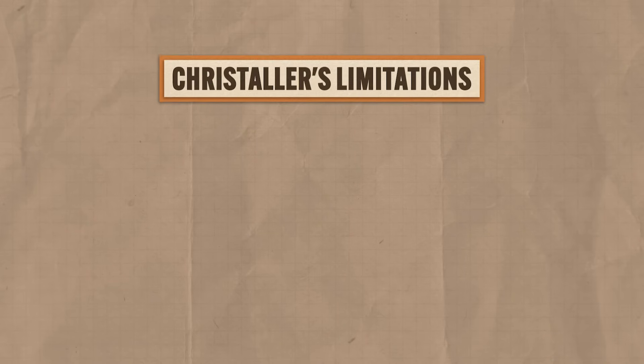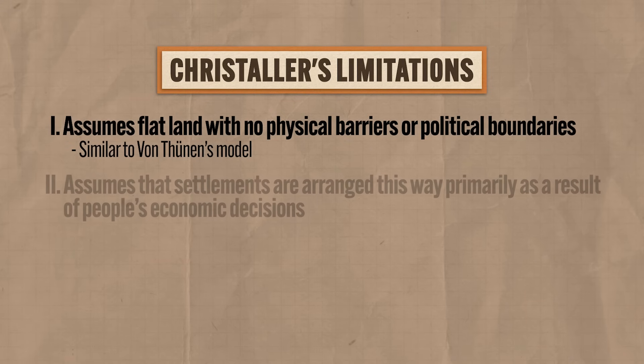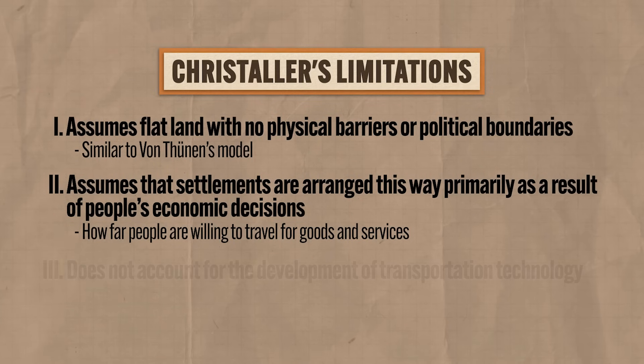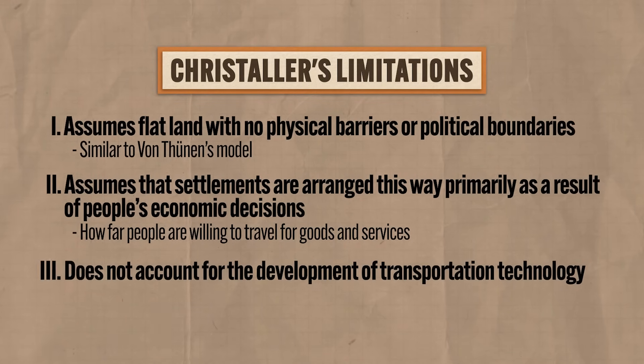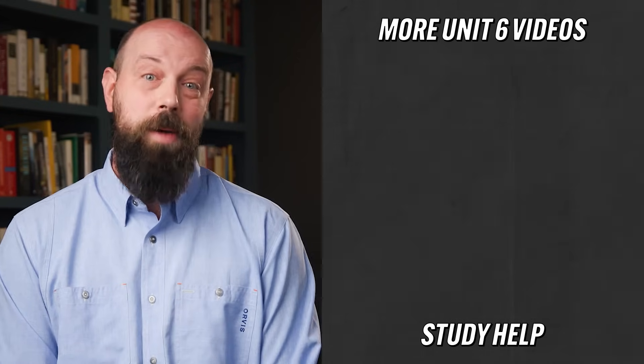Like any model, central place theory has limitations. It makes assumptions similar to von Thünen's model — flat land with no physical barriers or political boundaries. Christaller also assumes settlements are arranged primarily as a result of economic decisions, like how far people are willing to travel for goods and services, but this doesn't account for cities serving other functions like administration — for example, Washington, D.C. The biggest limitation is the development of transportation technology, which disrupts this model considerably. Because cars are nearly universal in many places, people can travel farther and faster, and with the rise of the internet you don't even have to leave your couch to purchase goods or watch sports. So Christaller's model has real-world constraints.